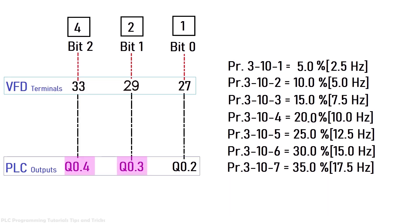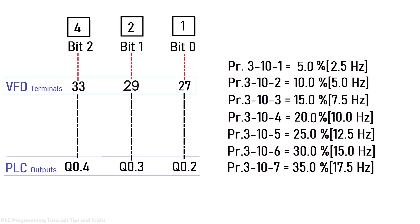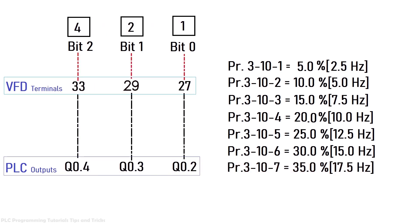If we turn on Q0.4 and Q0.3 together, it activates bit 2 and bit 1. The sum of their values is 6, loading preset frequency reference 6 — 15 Hz — and the motor will run at 15 Hz. If we turn on all three outputs of the PLC it activates all three bits, their sum is 7, loading preset frequency reference 7 — 17.5 Hz. So now we understand how to select different preset frequency references using the PLC digital outputs.